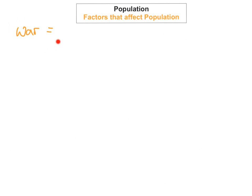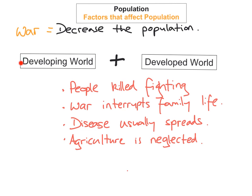The next factor that affects population is war, and war has a huge impact on population. Wars simply decrease the population. In both developing and developed worlds, war decreases the population because people are killed fighting. War interrupts family life, so they're not able to plan to have a family — maybe their husband could be away fighting — which means birth rates are lowered. Disease usually spreads, particularly around refugees in camps, where overcrowding makes disease rampant and causes people to die. Agriculture is usually neglected, resulting in a lack of food production, which will also cause people to die.